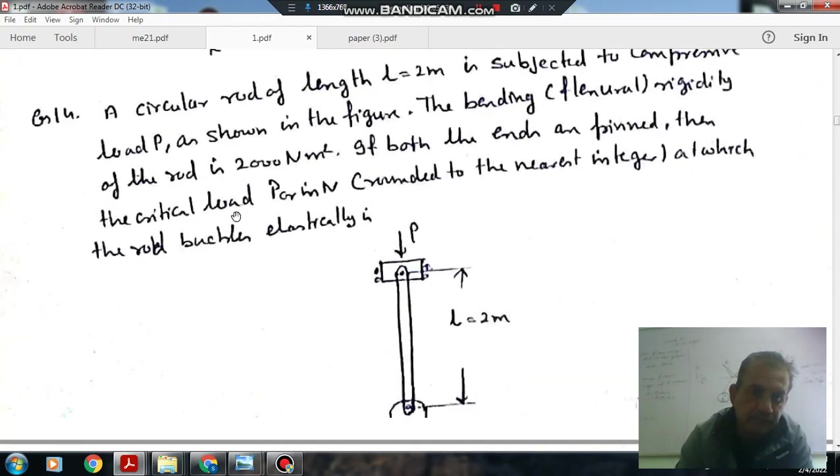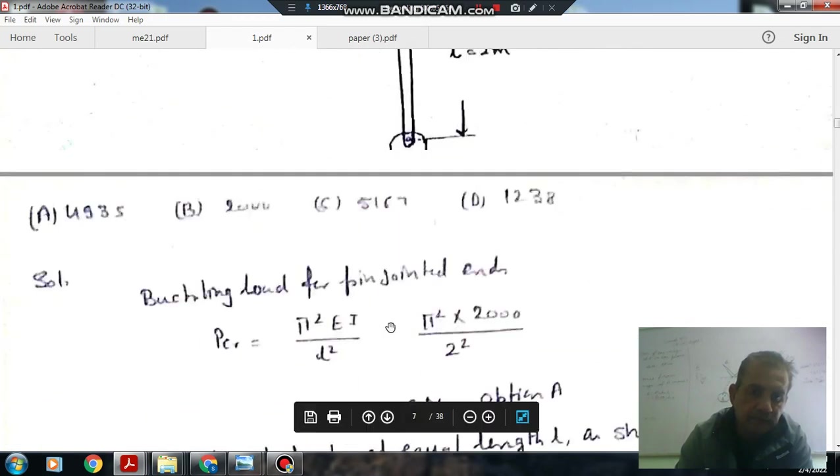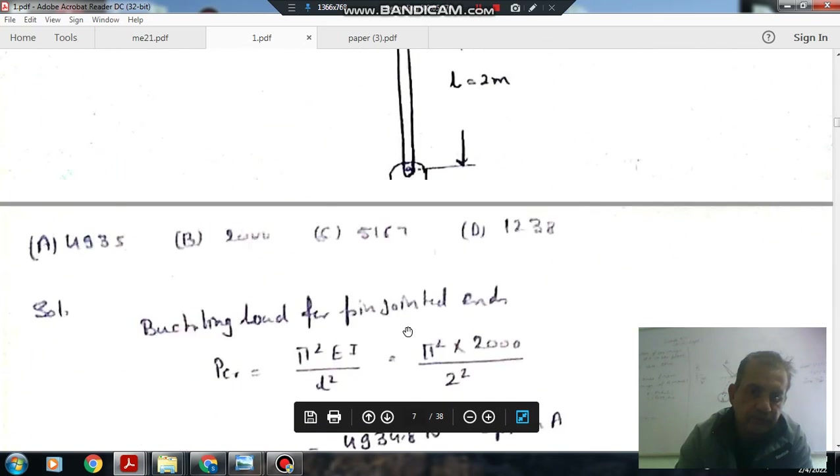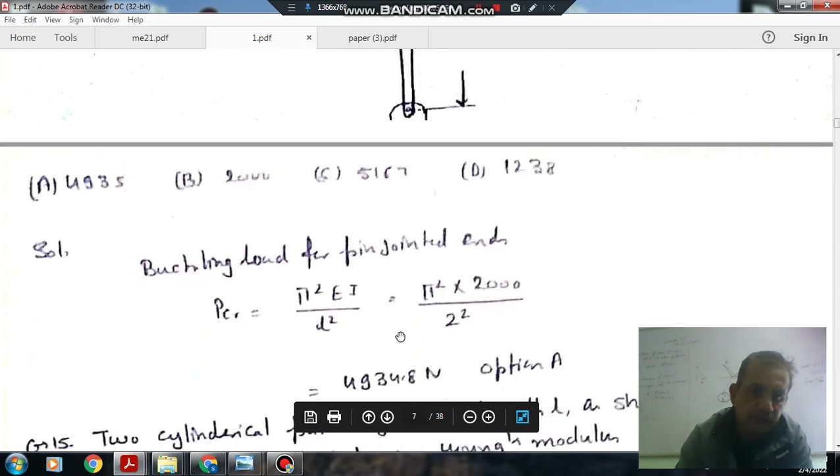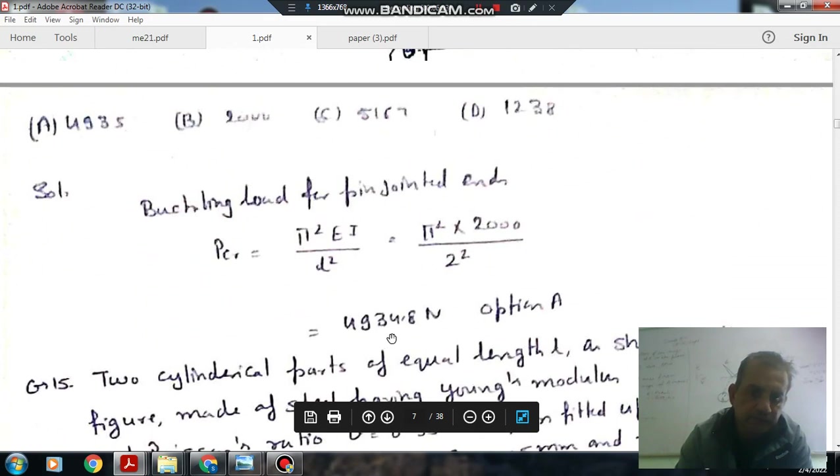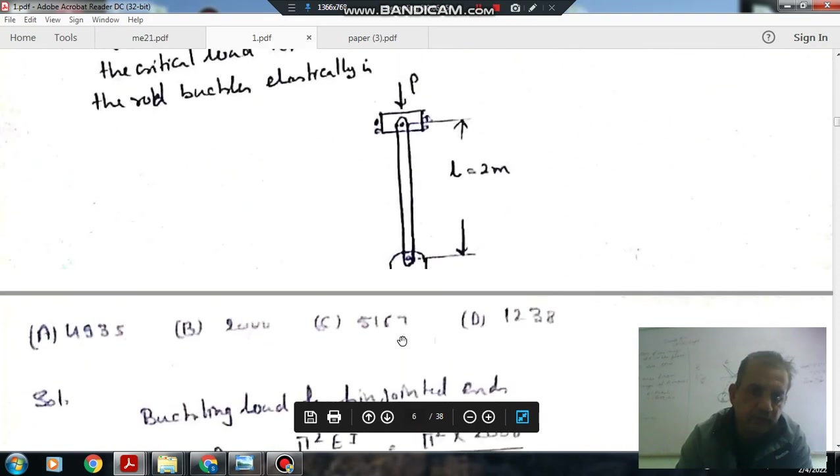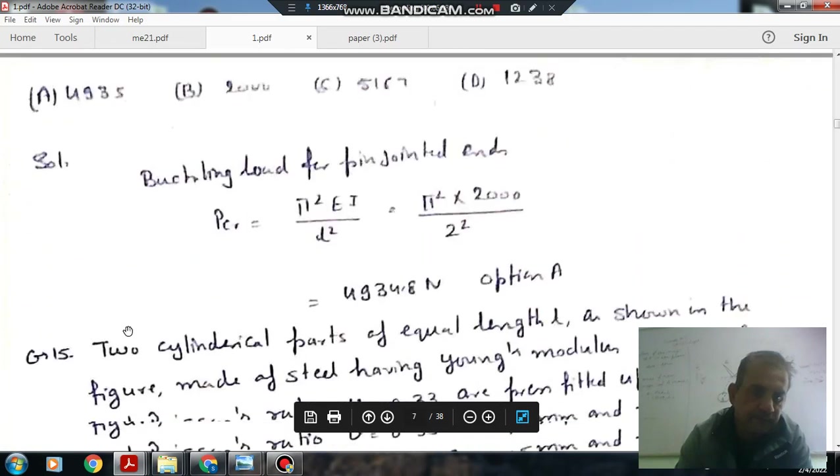Buckling load P in Newton is pi square EI by L square. Here EI is 2000 and L is 2 meters. Putting in the values we can get critical load for buckling, that is 4934.8 Newton. So approximately A.